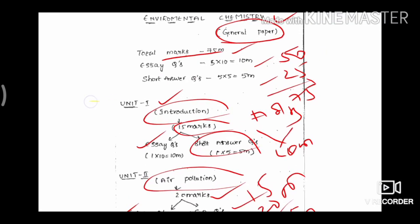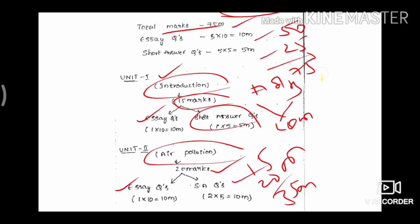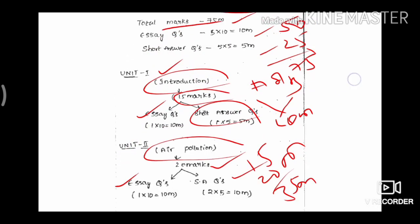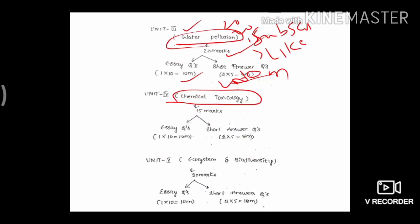Recap: Unit 1 is 15 marks, Unit 2 is 20 marks, followed by Unit 3, Unit 4, and Unit 5. This is how the marks are distributed across all units in the paper.